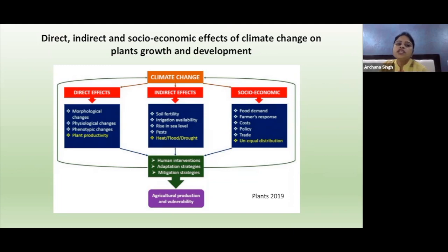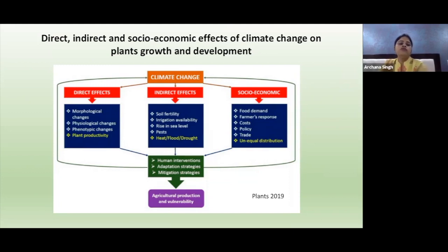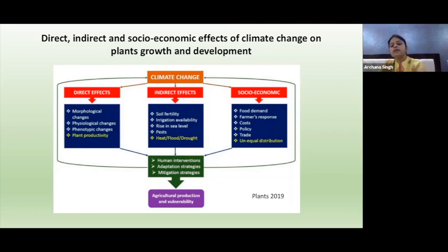There are certain direct, indirect, and socio-economic effects of climate change on plants' growth and development. The direct effects include morphological changes, physiological changes, phenotypic changes, and plant productivity. Indirect effects include changes in soil fertility, irrigation availability, rise in sea level, pests, heat, flood, and drought.